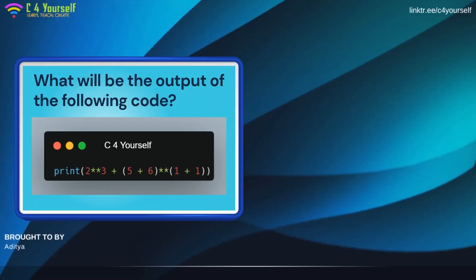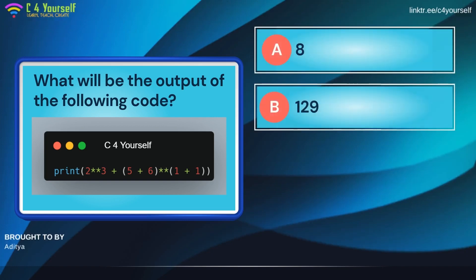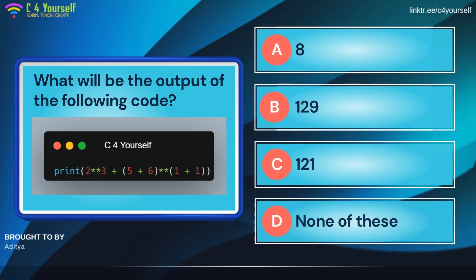Question number 2. What will be the output of the following code? The options are 8, 129, 121, and none of these. Ready? Start the timer.